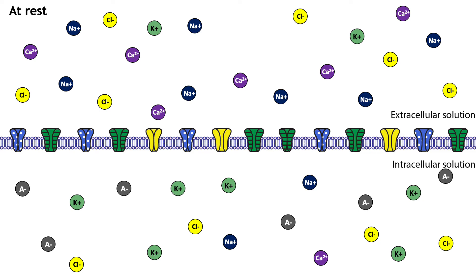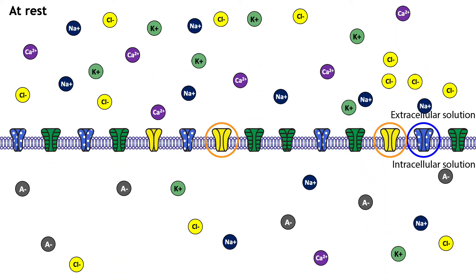You might ask, though, if the cell has these open non-gated ion channels and ions are moving at rest, won't the cell eventually reach potassium's equilibrium potential? If the non-gated potassium channels were the only open channels, the membrane potential would eventually reach potassium's equilibrium potential. However, the membrane has other open non-gated ion channels as well, though fewer compared to the potassium channels. The permeability of chloride is about half of that of potassium, and the permeability of sodium is about 25 to 40 times less than that of potassium. This leads to enough chloride and sodium ion movement to keep the neuron at a resting membrane potential that is slightly more positive than potassium's equilibrium potential.